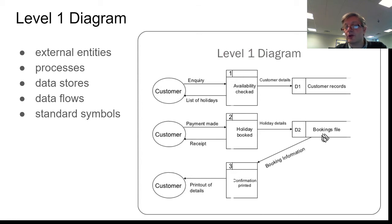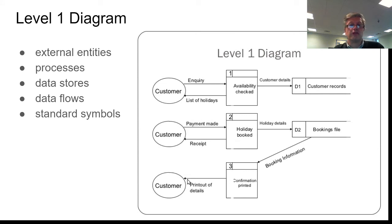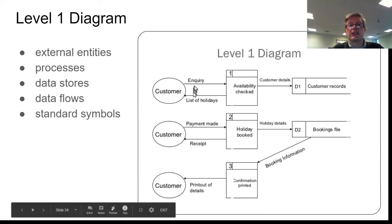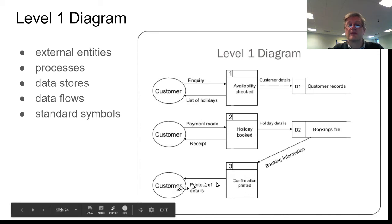The information from this booking has moved from this data store down to a confirmation. The process is that the details from here are then put into some kind of document, and that's then printed, and those printouts are posted out most likely or maybe emailed to the customer. So level one diagrams are not really that difficult to understand. We can see along these arrows what the information is that's flowing from, in this case, from an entity to a process, or from a process to a data store, from a data store back to a process, from a process back to an entity.